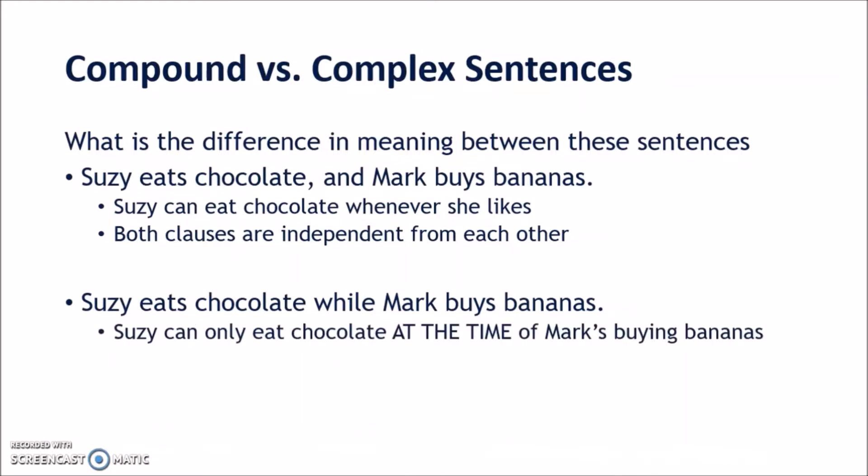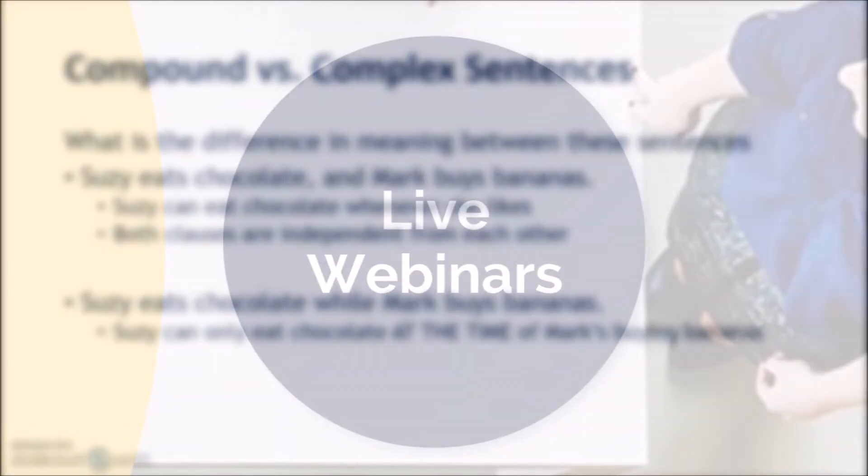In the next sentence, Susie can only eat chocolate at the time of Mark's buying the bananas. You couldn't separate these into two separate sentences — you couldn't say 'Susie eats chocolate.' 'While Mark buys bananas.' — because you lose this complex link between them.